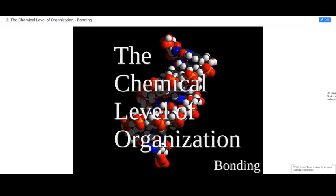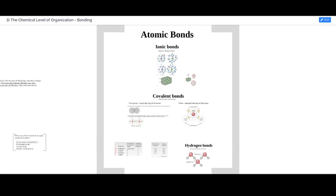Considering the levels of organization relevant to the human body, we want to start with the chemical level of organization, which is the lowest or simplest level from which everything else is composed. Talking about electronegativity is important because it establishes how certain elements interact together to form bonds and be part of compounds and molecules. We want to step up from elements and atoms individually to how they interact together.